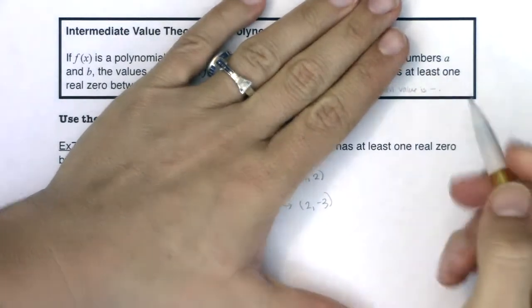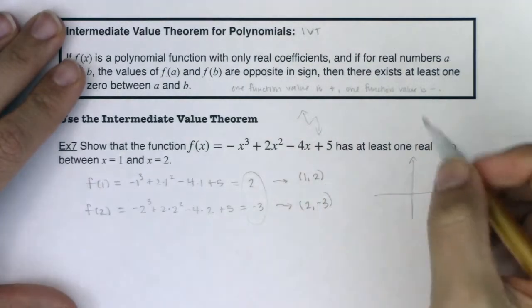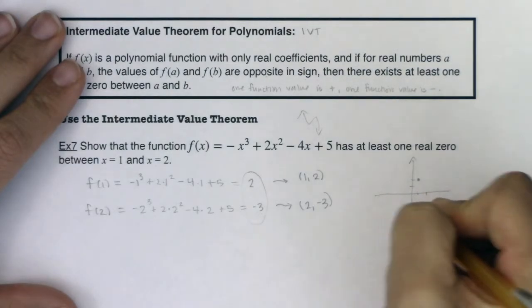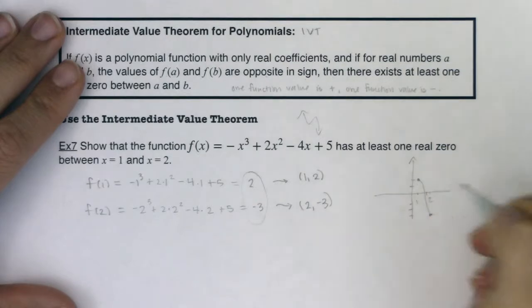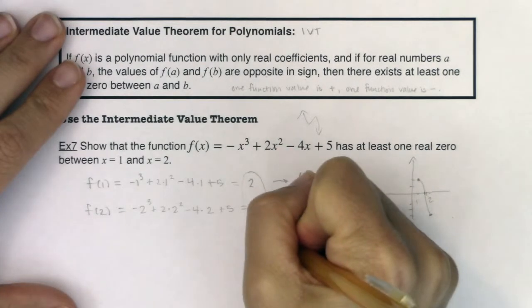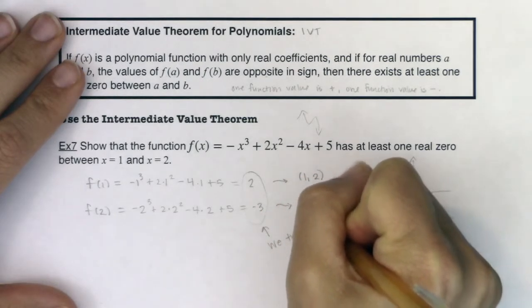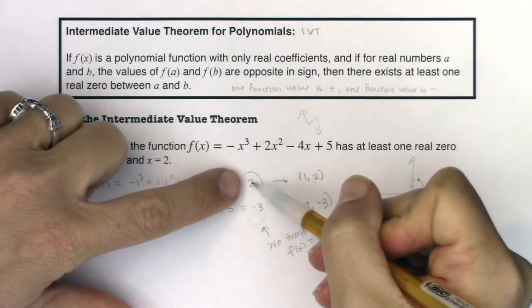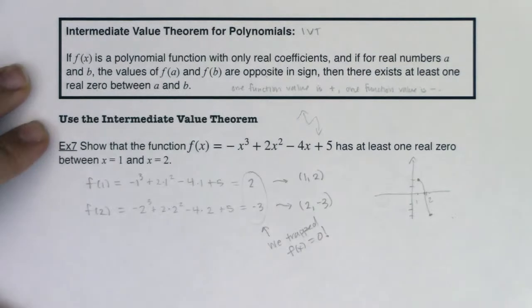So I had a negative cubic. Since it's a negative cubic, I mean, we know the general shape looks something like that. But let's see, we had (1, 2), and then I had (2, -3). So this function has to pass through the x-axis between x equaling 1 and x equaling 2. There has to be a real zero there. So if we look at this, between these two y values, we trapped f(x) equaling 0. That's what it means to be an intermediate value. It's intermediate between 2 and -3. Zero has to be between here.